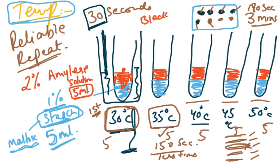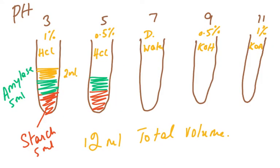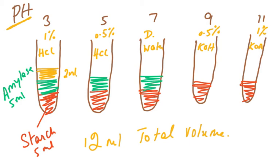To study the effect of pH, we again take five test tubes and add 5 ml of starch to all of them — the volume and concentration must remain the same. We add 5 ml of amylase to each. To change the pH, we add 2 ml of different solutions to each test tube: 1% HCl, 0.5% HCl, distilled water, 0.5% KOH, and 1% KOH.